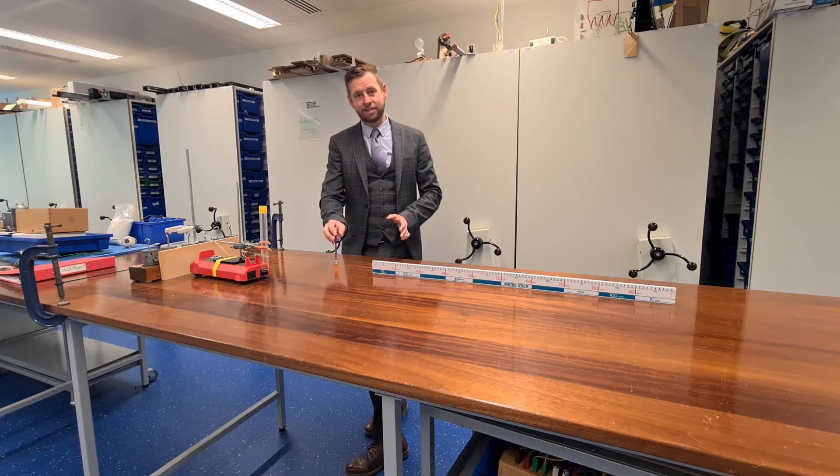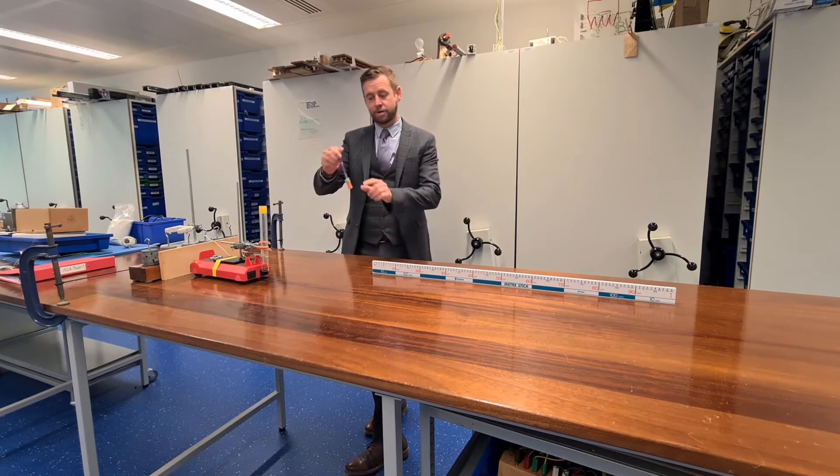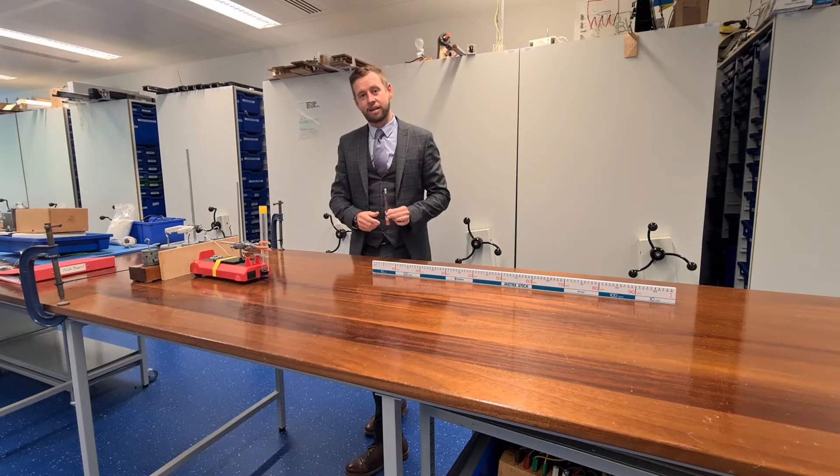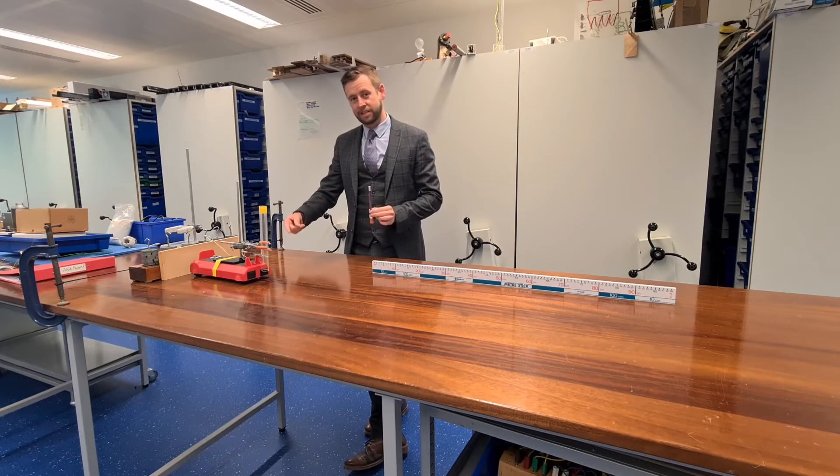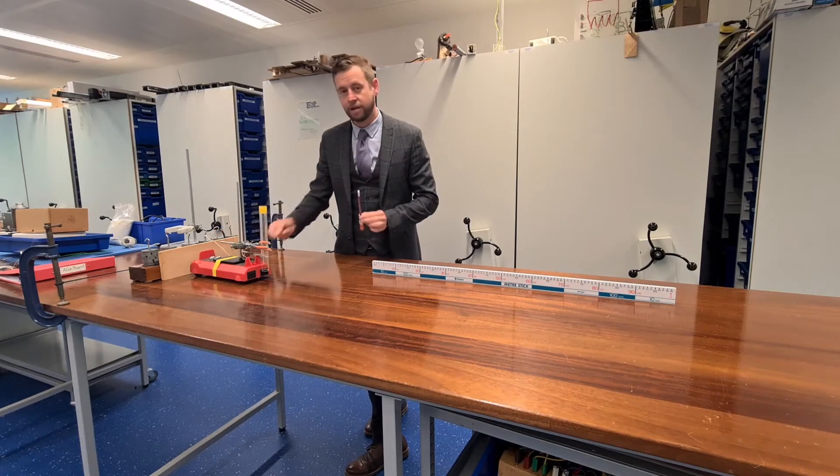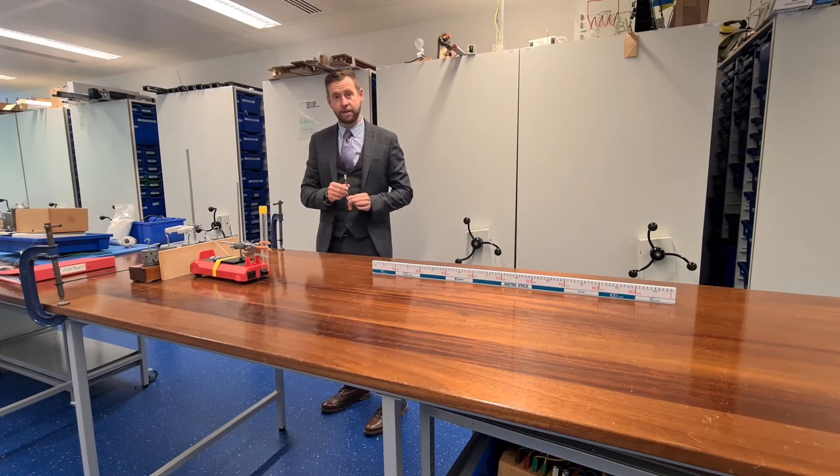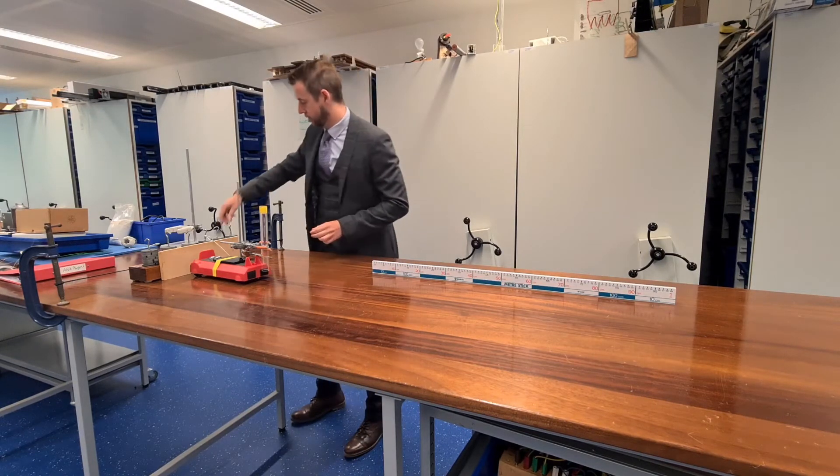Here we can model it because as this thing drops down and rubs on the table, at the moment what we have here is two nuts and this is going to provide a moderate braking force. But then we'll repeat the experiment a second time and we'll put these other nuts that are here on the trolley onto this to create a greater braking force and to observe the effect of that. So let's do it now with two.